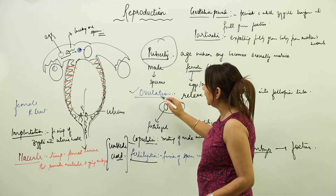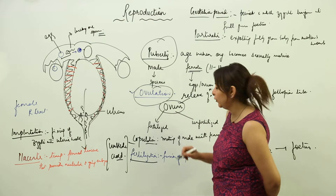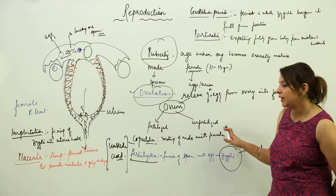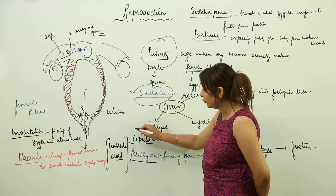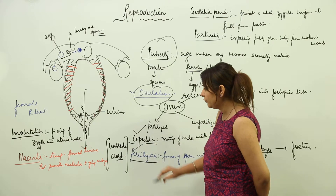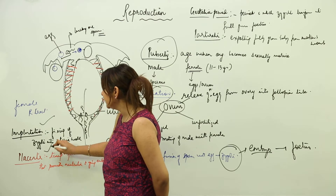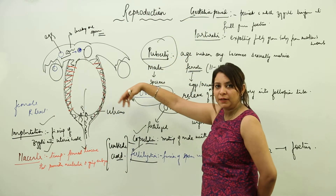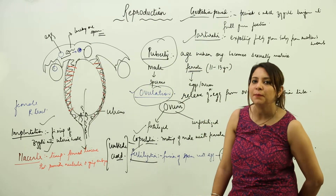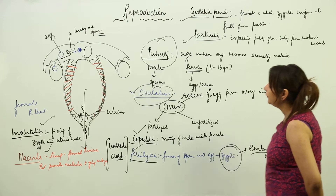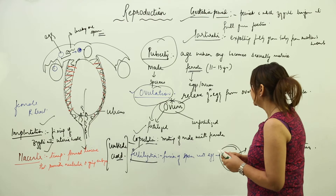To summarize the fertilized path: first there is puberty, then ovulation, then copulation, followed by fertilization, then implantation, then placenta formation, then the gestation period where the zygote develops into a fully grown baby, and finally parturition — the expelling process. This is the fate of the ovum if it gets fertilized.